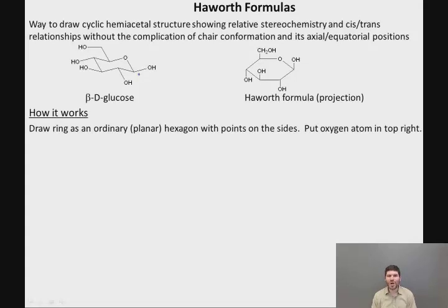So how does it work? First of all, we draw the ring as an ordinary planar hexagon with points on the sides, so you have a flat line on the top and flat line on the bottom. If you look at this hexagon, you can see that we're looking down on it a little bit at an angle, not straight down onto it. And we're going to put the oxygen at the top right position just like it is in the chair conformation.